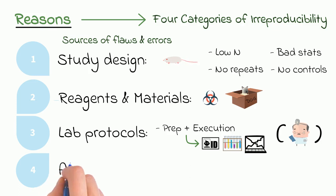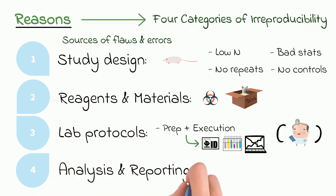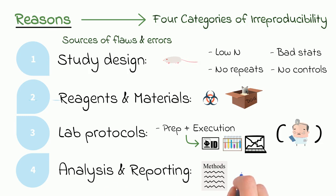And for the final category, data analysis and reporting, this refers to whether or not the authors of a given study have included enough of the relevant details in their methods for others to repeat what they've done. It also includes actual errors in the analysis, like accidentally screwing up a calculation without realizing, which is thankfully a lot more rare as far as we know.